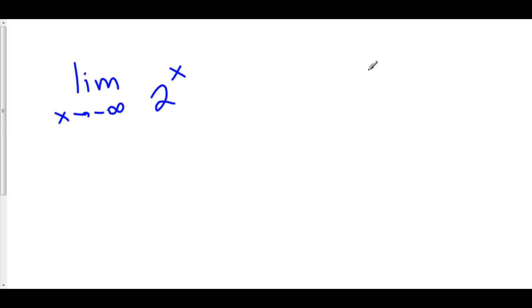So again, this is the same thing as 1 over 2 to the infinity. 2 to the infinity is expanding very, very fast. And so our fraction is going to converge to 0 as x approaches negative infinity.